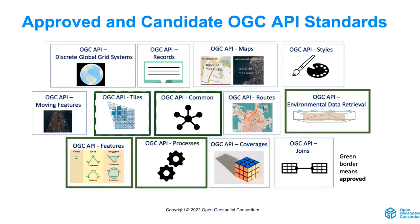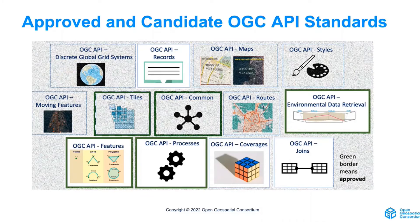Even if we have two hours, we don't have time to go through all of this. So we are going to focus on the ones that are more relevant for the GeoE3 project. These will be OGC API Features, OGC API Processes, OGC API Coverages, OGC API Joins, OGC API Environmental Data Retrieval — or EDR — and finally OGC API Records.